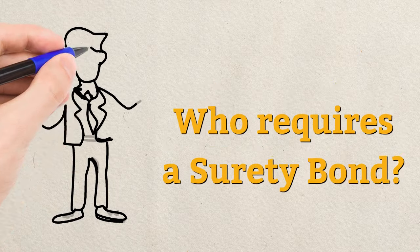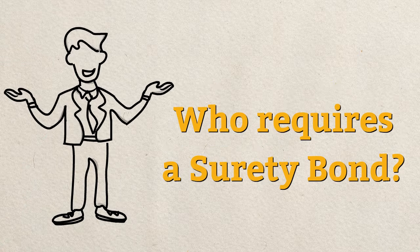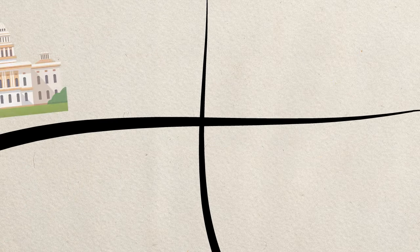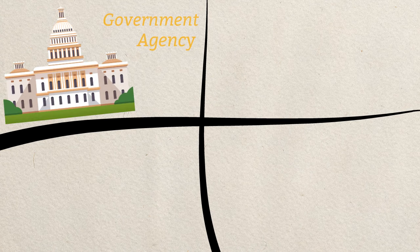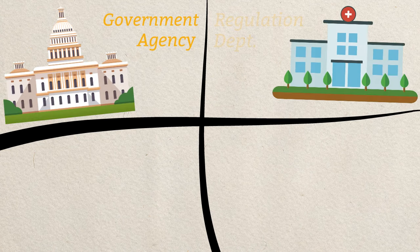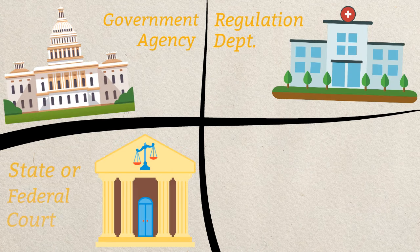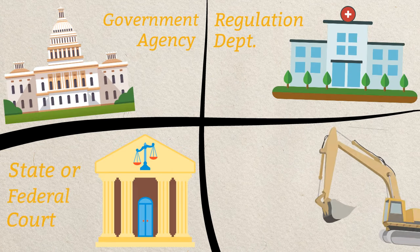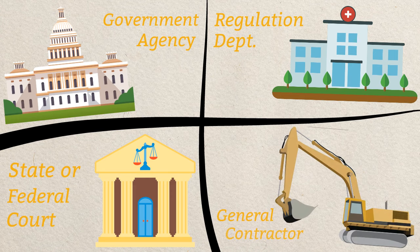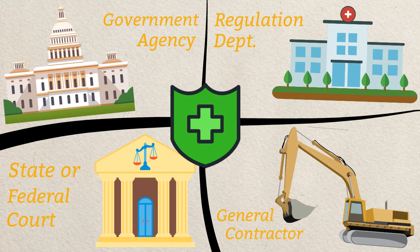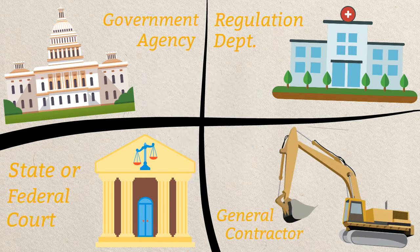Who requires a surety bond? Most often, surety bonds are required by a government agency, regulation department, state or federal court, or general contractor as a form of protection. It also serves as a form of protection for consumers.